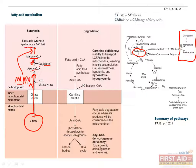Subsequent modification of palmitate can lead to further chain elongation, desaturation, or acylglycerol formation. Since carbons are only added two at a time, this can only create even-chain fatty acids, which have an even number of carbons. To create odd-chain fatty acids, propionyl coenzyme A is used.